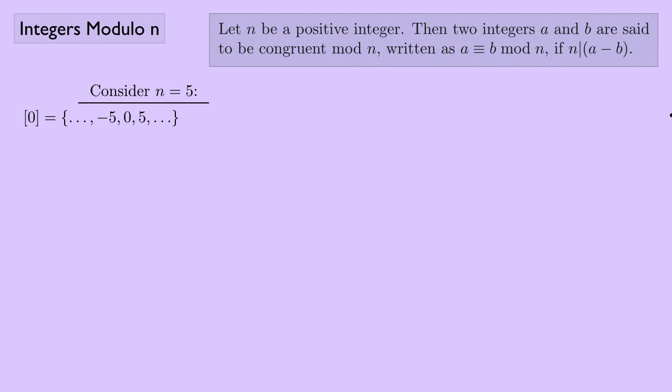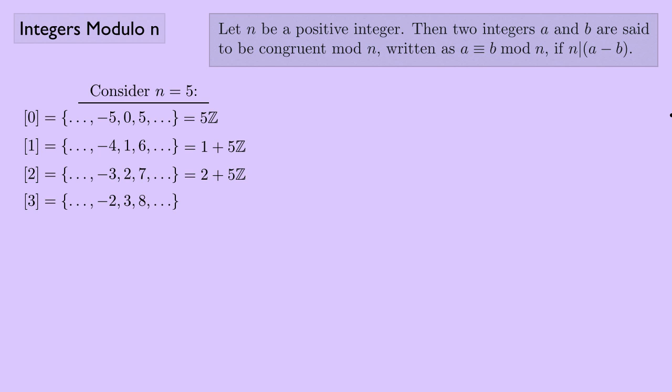For example, if n equals 5, we have the equivalence class of 0, which consists of all multiples of 5, written 5ℤ. Then the equivalence class of 1, written 1 + 5ℤ; the class of 2, written 2 + 5ℤ; the class of 3, written 3 + 5ℤ; and the class of 4, written 4 + 5ℤ.